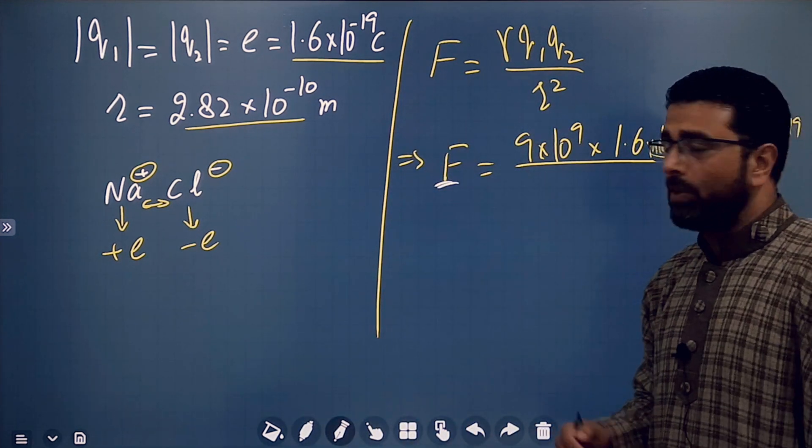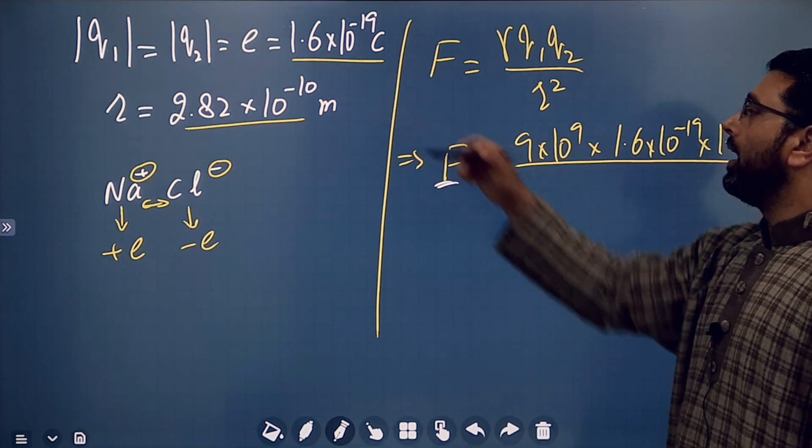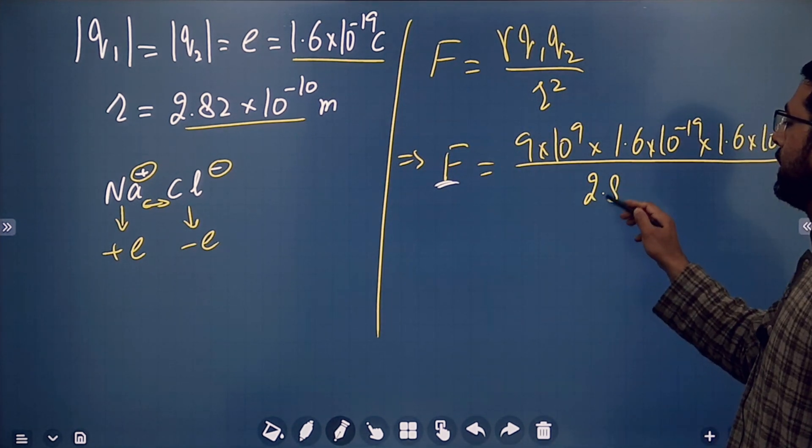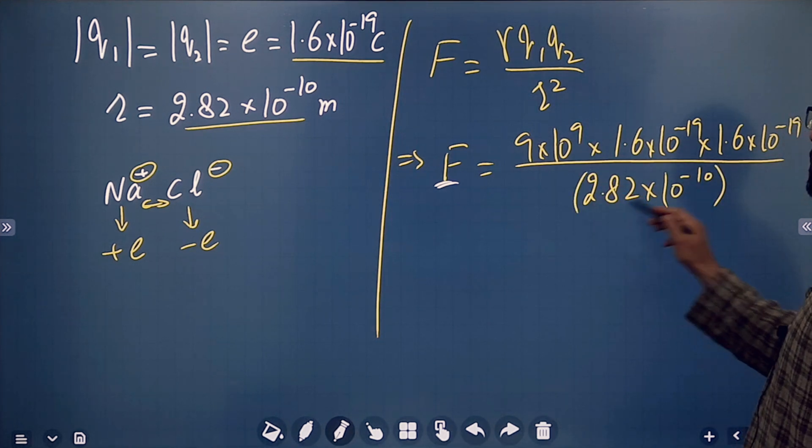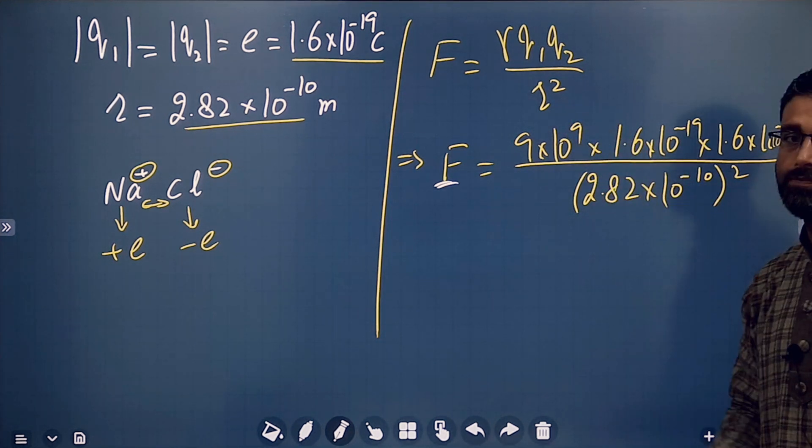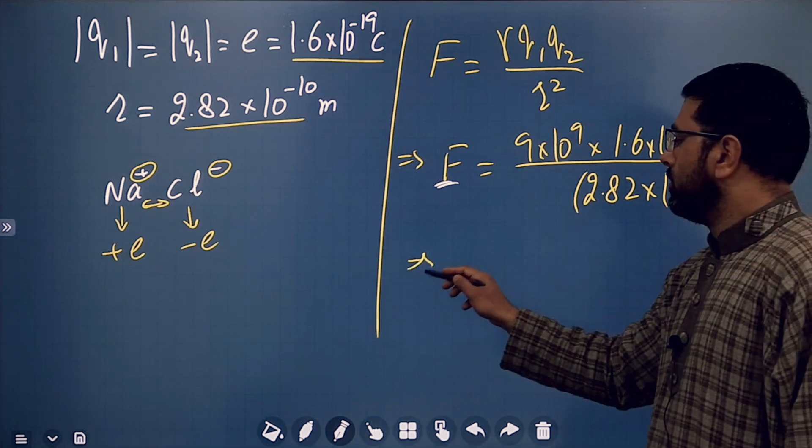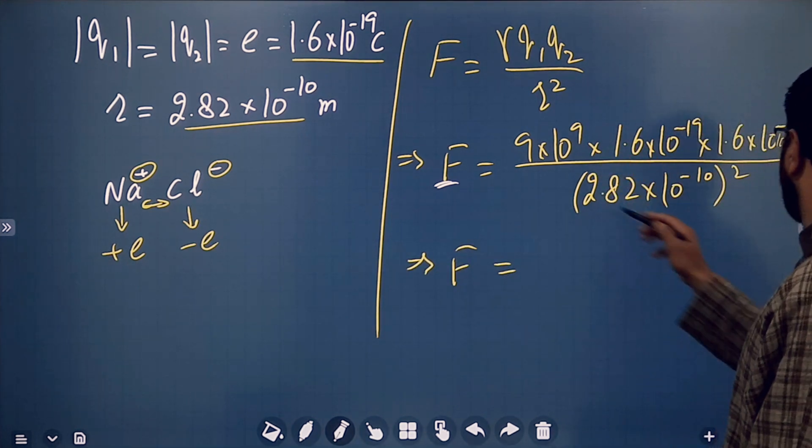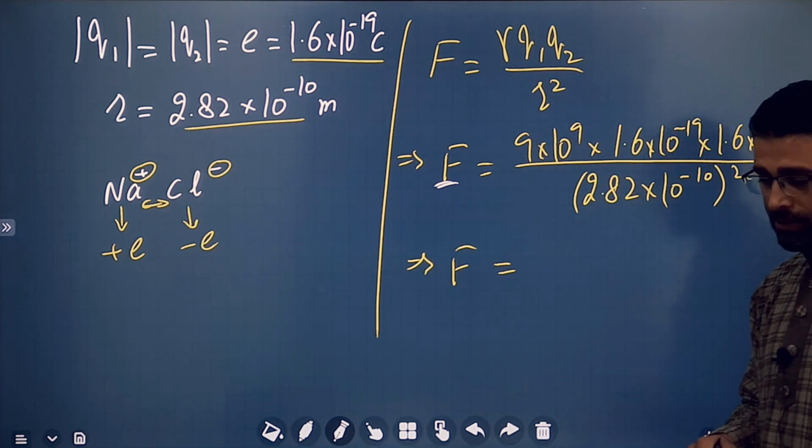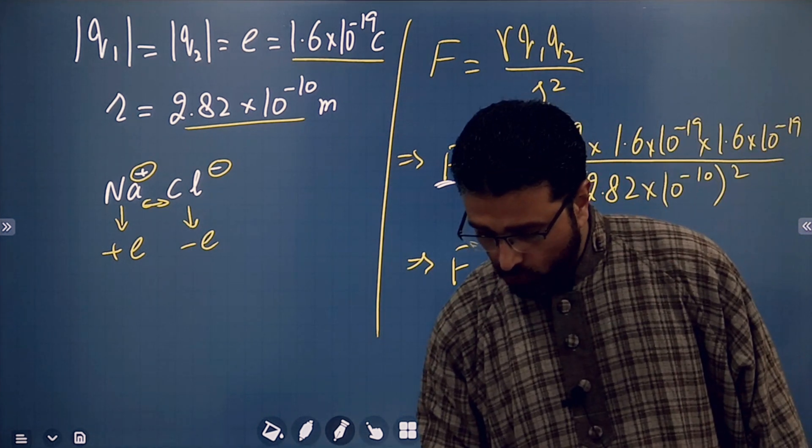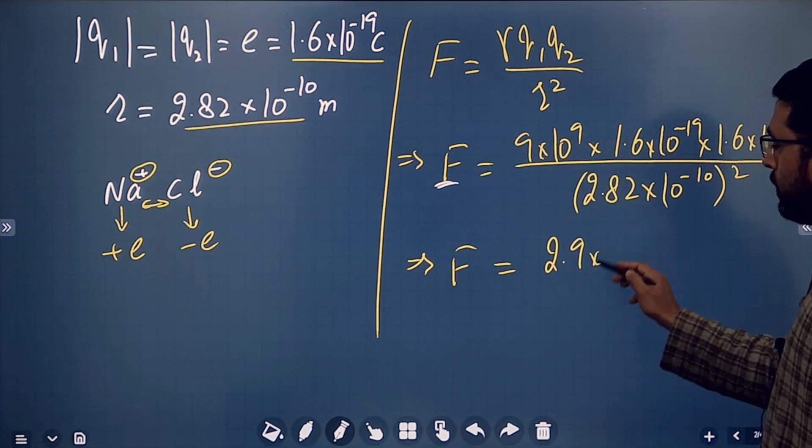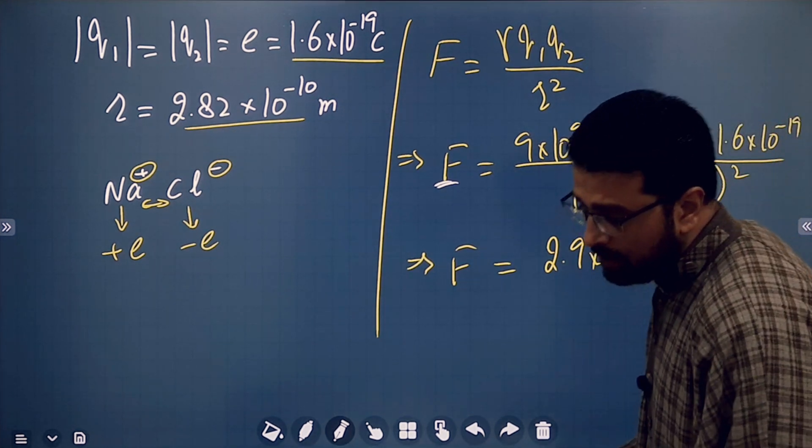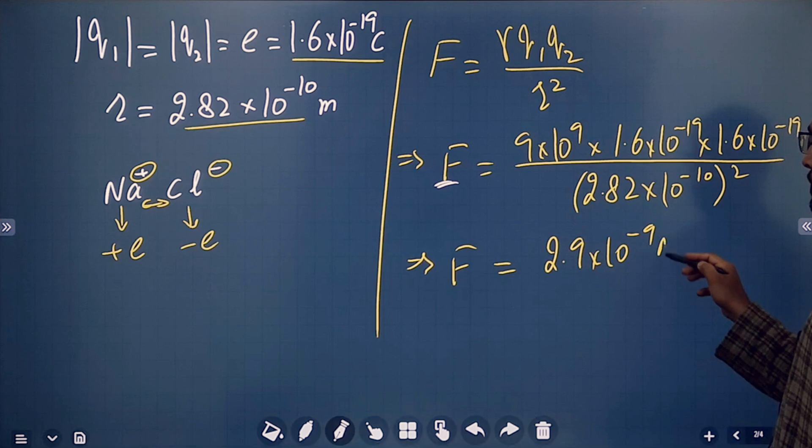Here, we are just finding the magnitude of that force. Then R is 2.82 × 10^-10 with this square there. So, this thing is to be worked out. I have already done that. I will encourage you to do it. Force between the two ions is 2.9 × 10^-9 newtons.